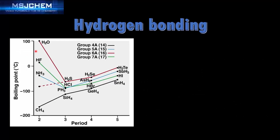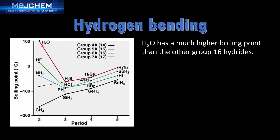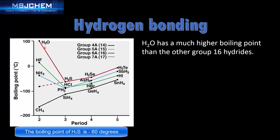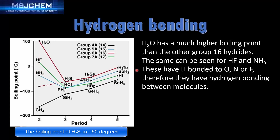In this graph it is easy to see the effect that hydrogen bonding has on the boiling point of water. H2O has a much higher boiling point than the other group 16 hydrides. The boiling point of water is 100 degrees, while hydrogen sulfide has a boiling point of about negative 50. The same can be seen for hydrogen fluoride and NH3 ammonia — these molecules have hydrogen bonded to oxygen, nitrogen, or fluorine, therefore they have hydrogen bonding between molecules.